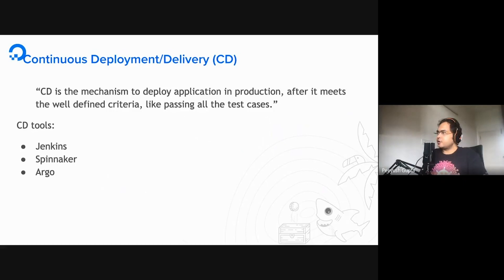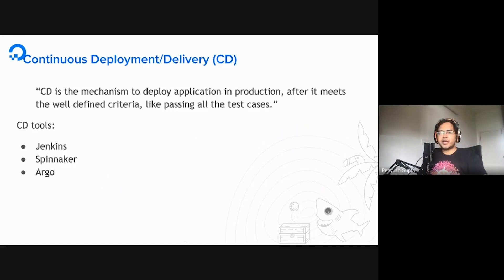Let's talk about continuous deployment or delivery — CD — which is the mechanism where you can deploy applications to a production or staging environment after meeting well-defined criteria, usually passing all test cases. Once you're confident about your test cases, you can deploy that particular package from the build stage either to production or a staging environment. Multiple tools can help with this: Jenkins, Spinnaker, and Argo. You'll notice Jenkins appears as both a CI tool and a CD tool, and we'll see why.